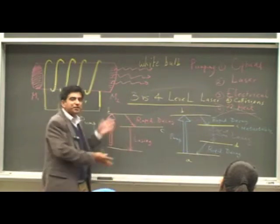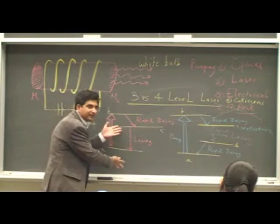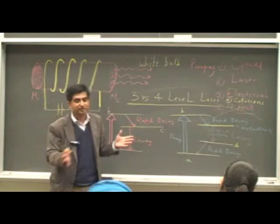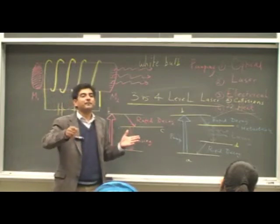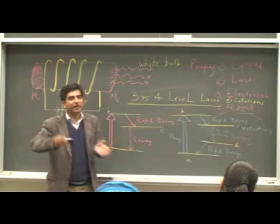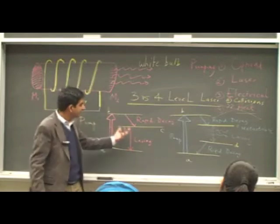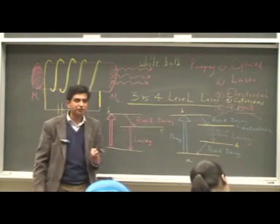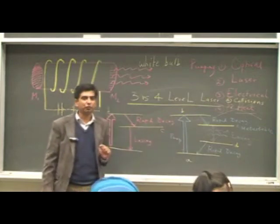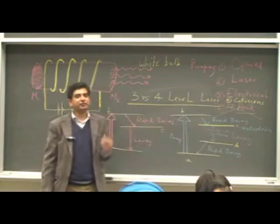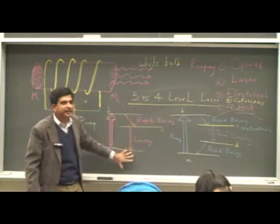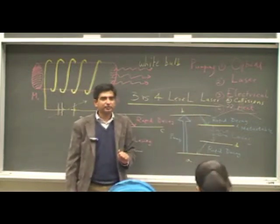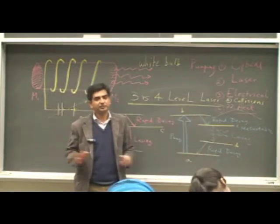If you want continuous operation in this Ruby system, in this three level system, it requires a far greater pump energy. And it might not become very cheap or efficient to input that energy. Therefore, this kind of scheme generally works in the pulsed mode. You pump, switch off. And you get a pulse of light, no light. Pulse of light, no light. So this generally operates in the pulsed mode. Whereas it is easier to operate this in the continuous mode. So there are different modes of operation. Right?